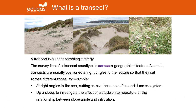A transect is a form of sampling strategy in which geographical features are sampled along a line. The survey line of a transect usually cuts across a geographical feature. As such, transects are usually positioned at right angles to the feature, so they cut through different zones.